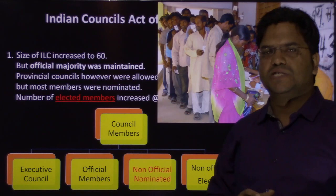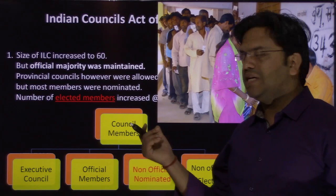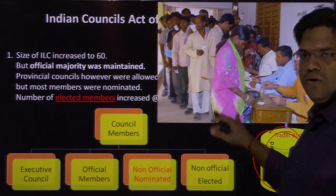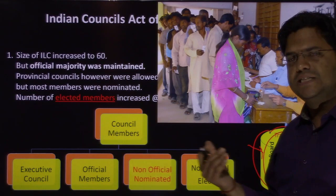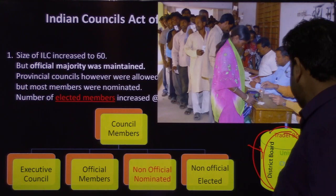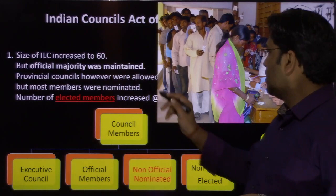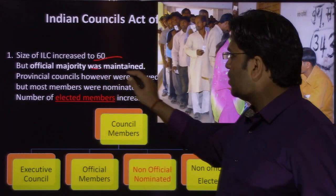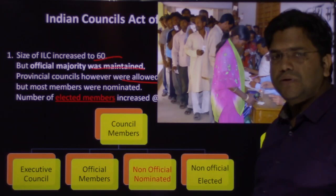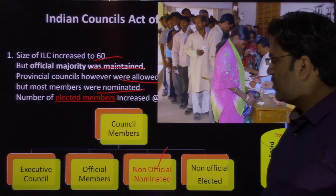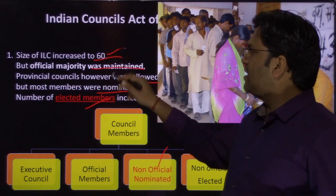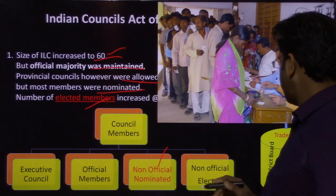I hope you have clarity on the first provision. I spent a lot of time on it so you could visualize what the executive council is, what official members are, what non-official nominated members are, and what non-official elected members are. So to summarize: the size of the ILC was expanded to 60; official majority was maintained at the center; provinces were allowed non-official majority but most members were nominated; and elected members were slightly increased at both central and provincial levels.